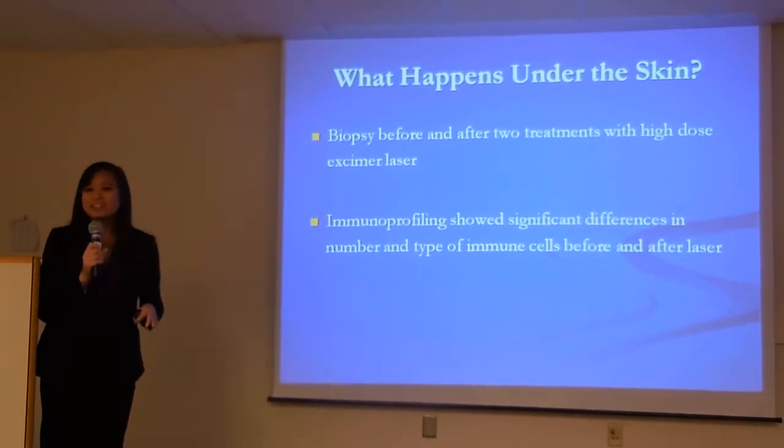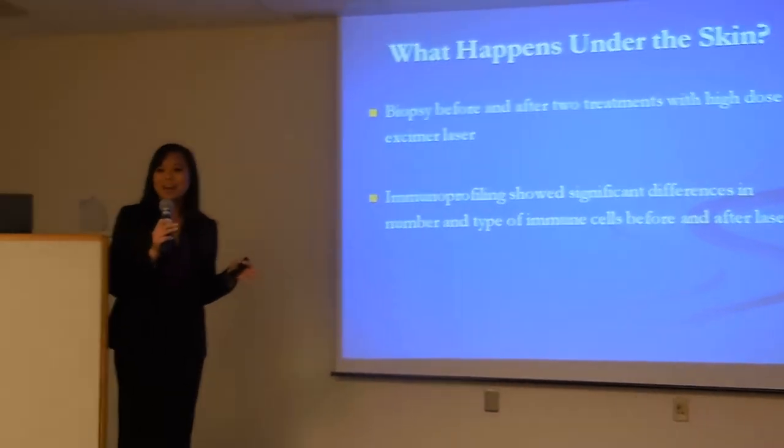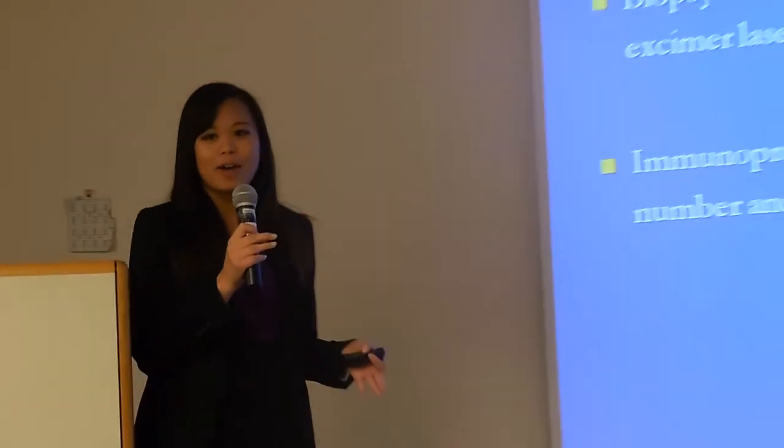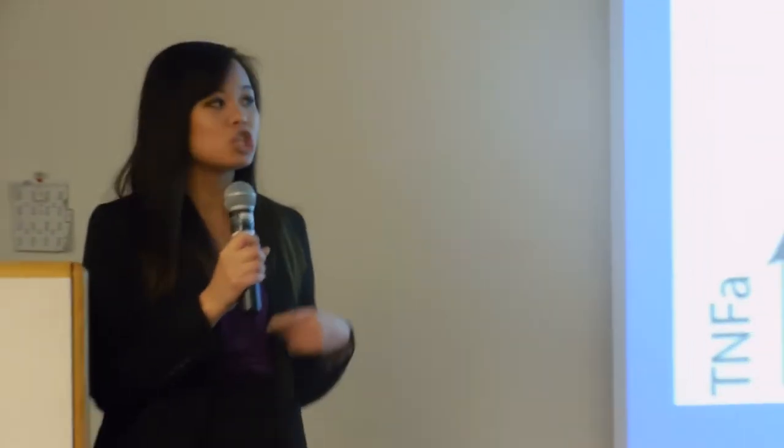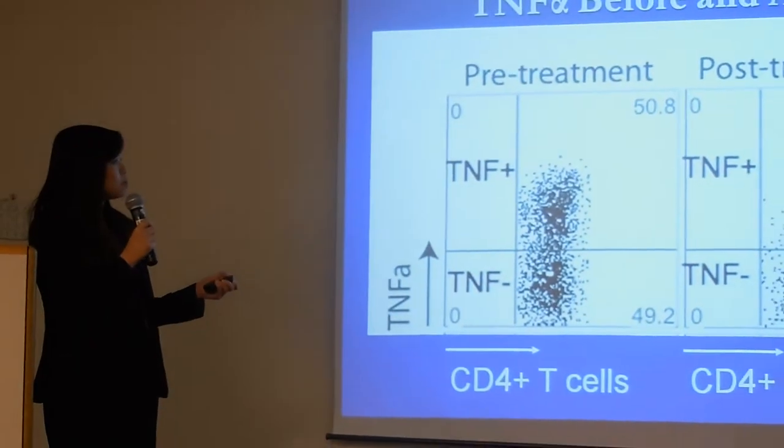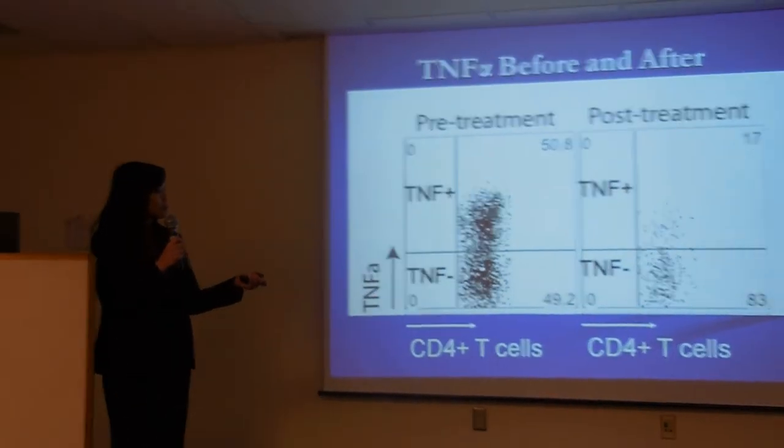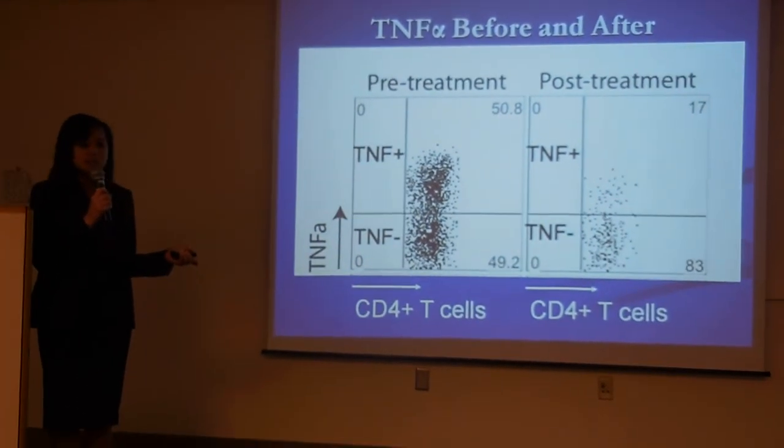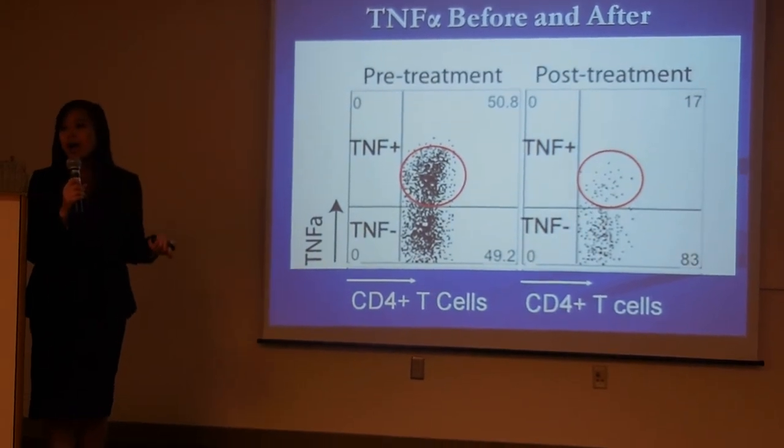So we thought that this was really interesting, so we wanted to see what was happening underneath the skin. So we did some immunoprofiling, which is basically we took a biopsy before the laser treatment and after the laser treatment, ran it through flow cytometry and analyzed the cells that popped up. And what we found was that there was a great reduction in T cells present in the plaque after treatment with the laser. So we also looked at TNF-alpha-producing cells compared to non-TNF-alpha-producing cells. And we found that before treatment, there's a very high number. But after treatment, the total number of T cells is reduced as well as the number of TNF-alpha-producing cells.